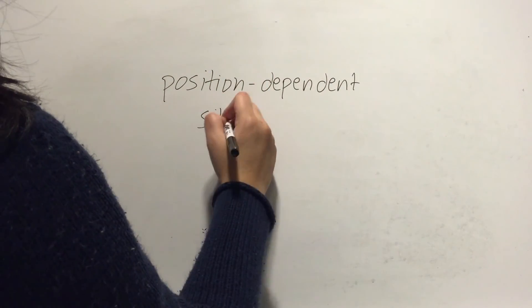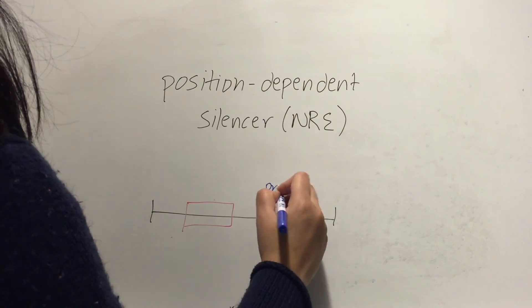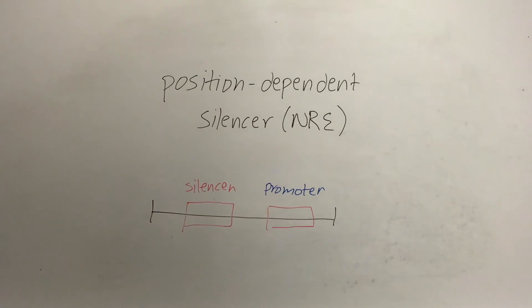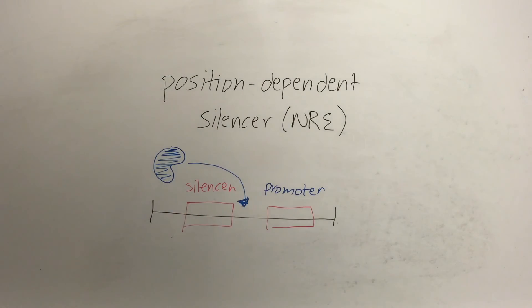A second type of silencer is called a position-dependent silencer. It inhibits gene expression by bending the shape of the DNA in the promoter region. This bend keeps activators from binding to the DNA, and in turn the DNA is not transcribed.